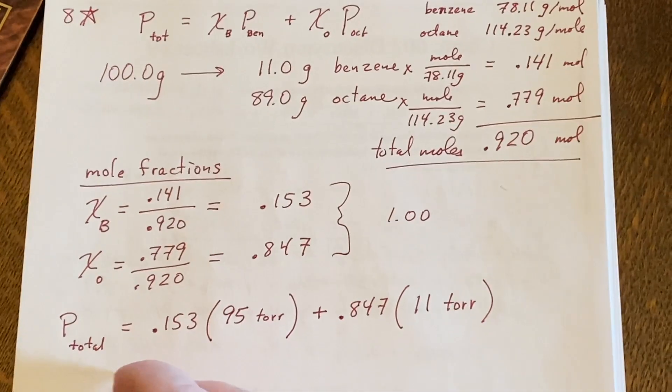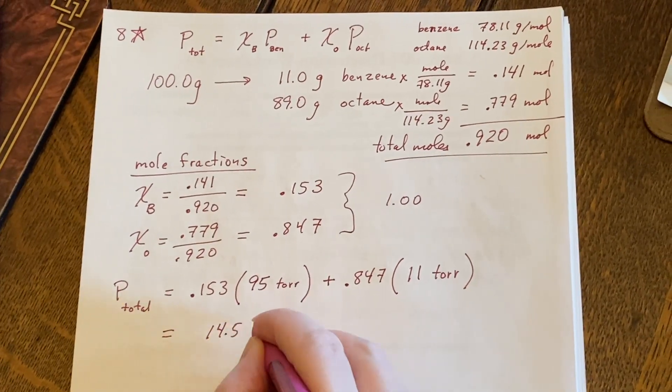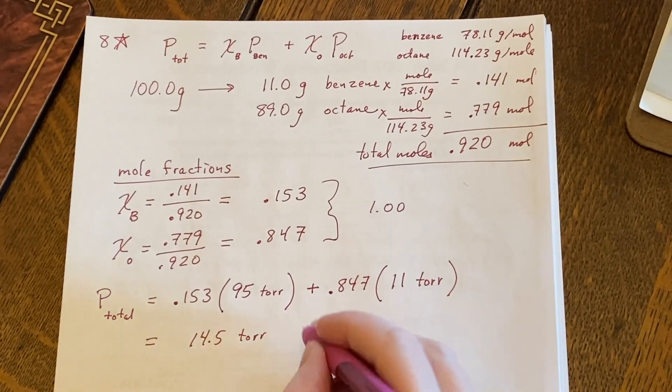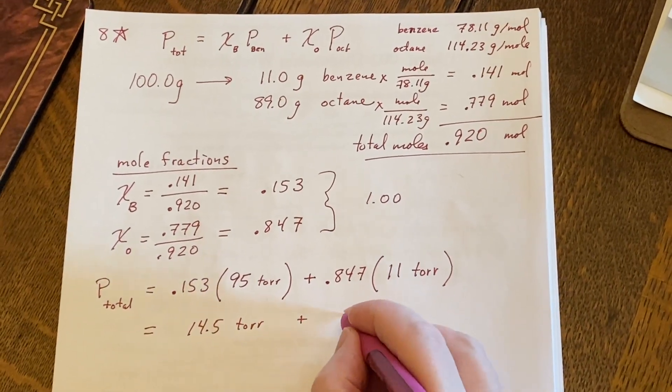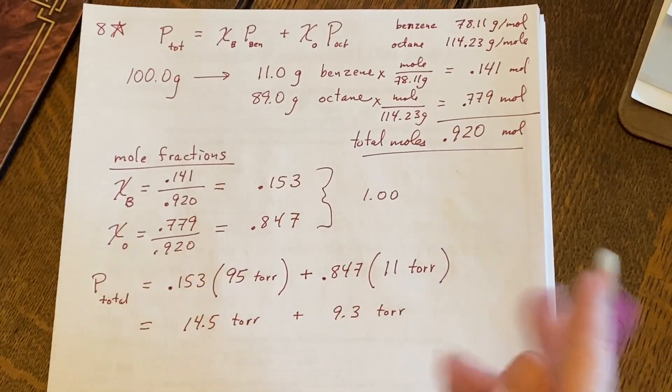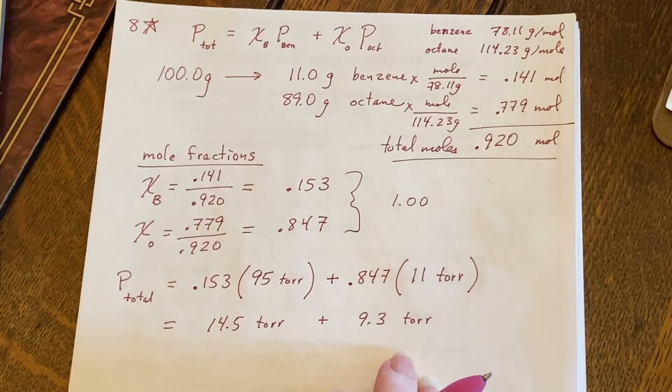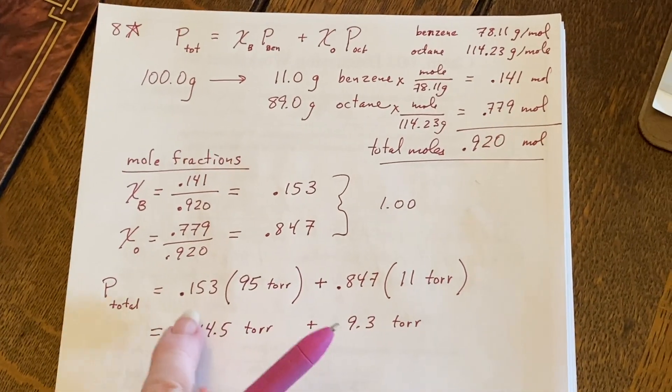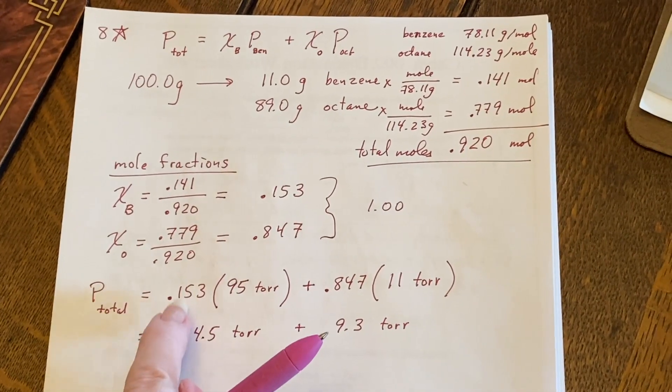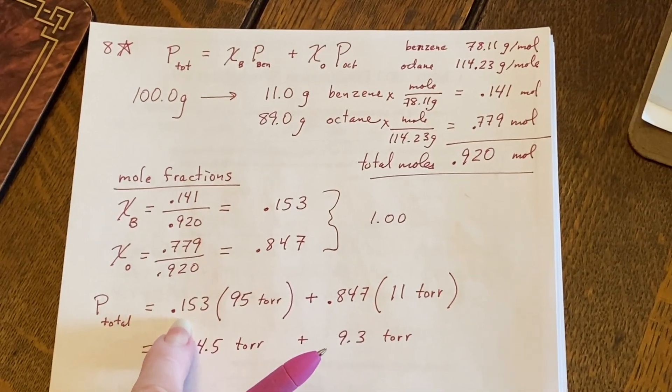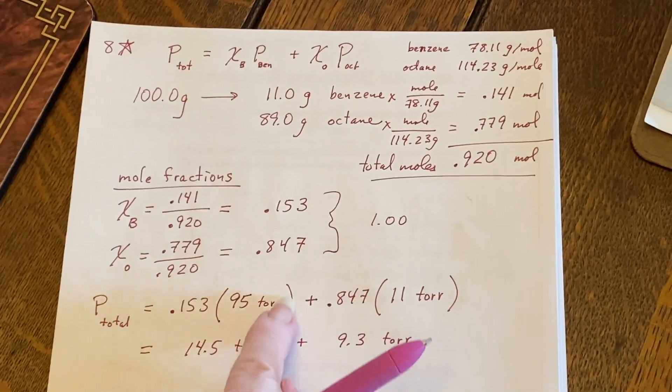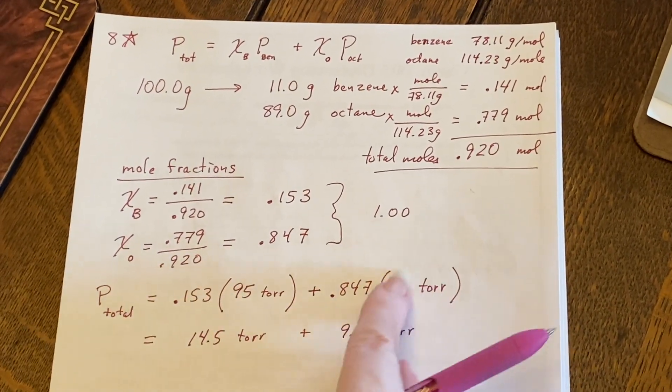When we calculate these, this is going to give you 14.5 torr and this one is going to give you 9.3 torr. So this is very interesting. It shows us that even though there's less benzene in the mix because its pressure is so much higher than the other substance, it ends up actually being responsible for more of the total pressure.